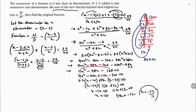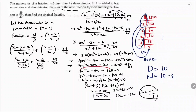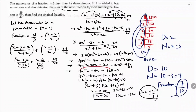So x equals 10, and x is the denominator. Denominator is 10. And numerator is x minus 3, which is 10 minus 3, which is 7. So the fraction is numerator by denominator, 7 by 10. 7 by 10 is the answer.